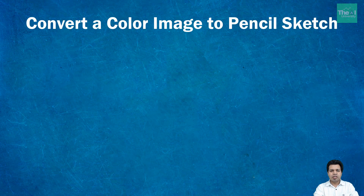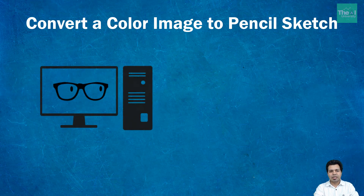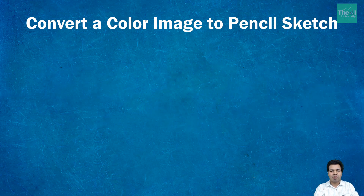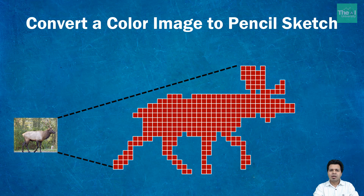Let me first tell you what exactly computer vision is. Computer vision is an area of study that helps computers extract information from images in an automated fashion, thereby trying to find out the content of an image or a video. The content of an image can be extracted from its pixels, and as you might already know, every image is composed of small pixels.